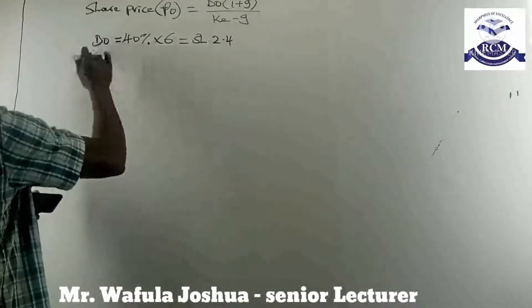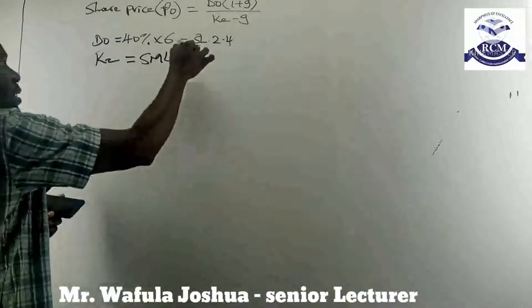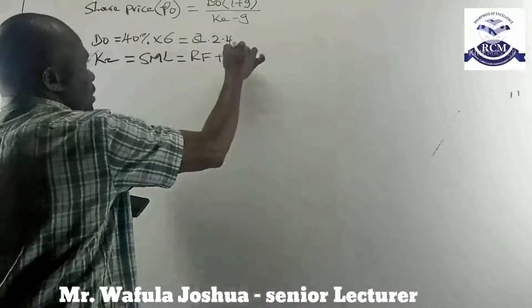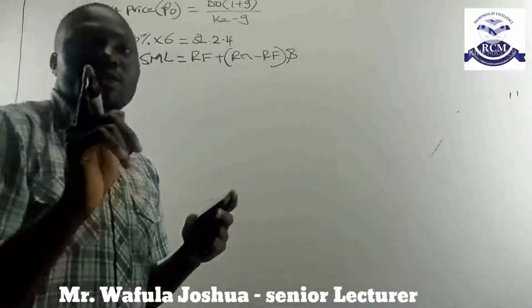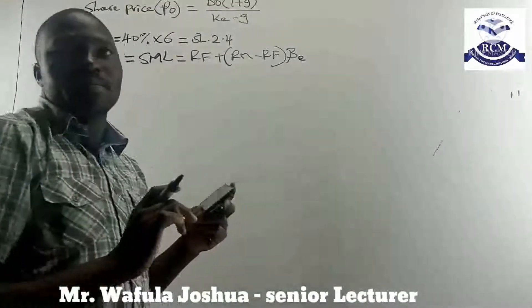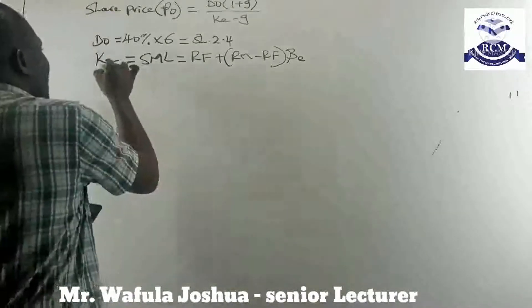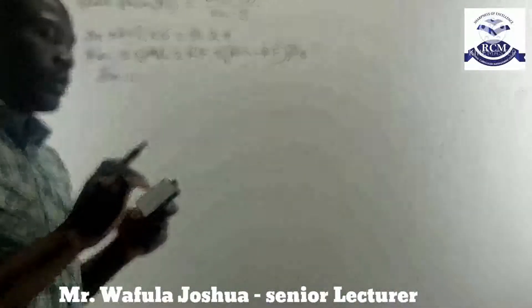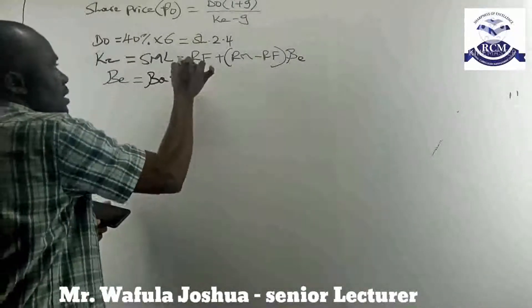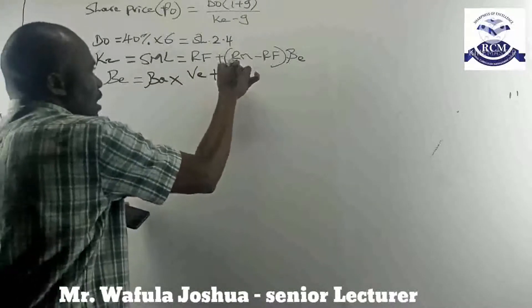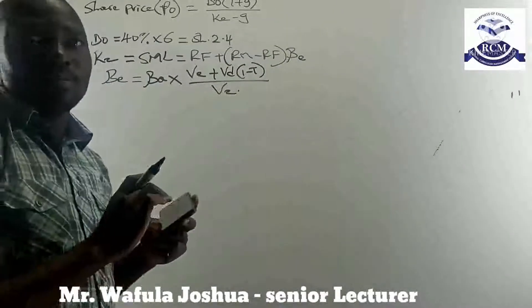Our cost of equity will be calculated using the security market line — the CAPM — which is RF plus (RM minus RF) times beta. The beta factor we need to use is not the asset beta; we need to get the equity beta. We get the equity beta by applying the Hamada formula: asset beta times (value of equity plus value of debt adjusted for tax) divided by value of equity.